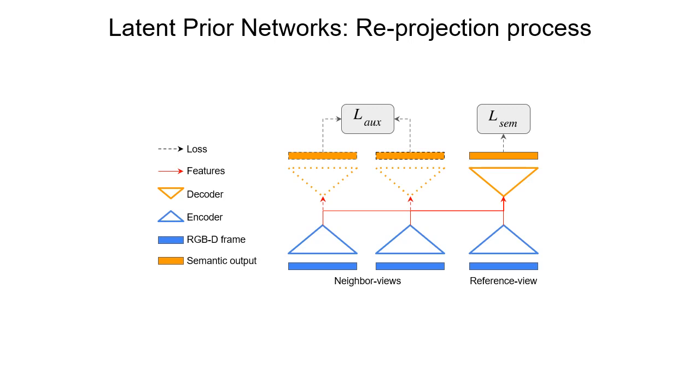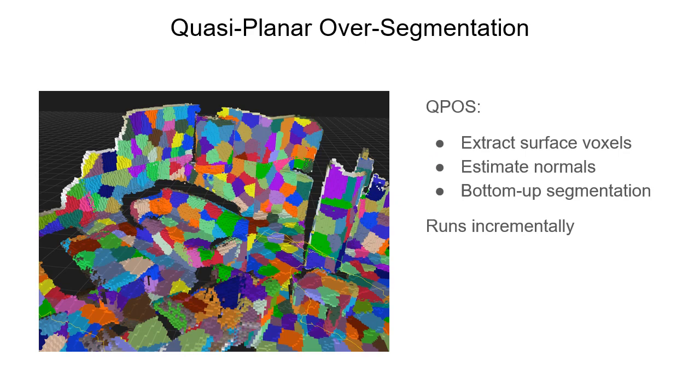We aim to reduce the map cardinality by grouping voxels into segments. We propose a novel quasi-planar over-segmentation method, relying on surface normals. It processes the surface voxels in an incremental manner, producing a small set of segments.